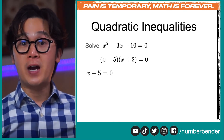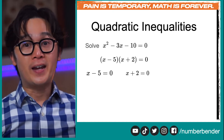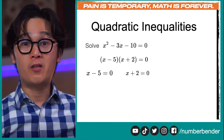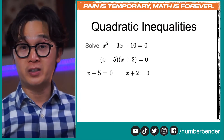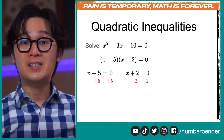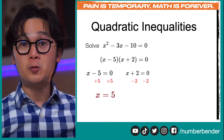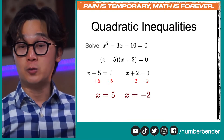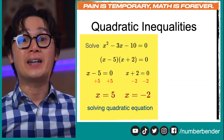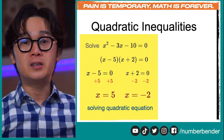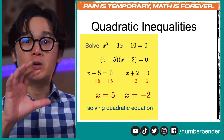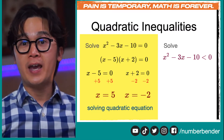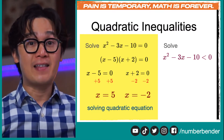For x minus 5 equals 0, adding 5 to both sides gives x equals 5. For x plus 2 equals 0, subtracting 2 from both sides gives x equals negative 2. This is how we solve a quadratic equation, and this factoring approach is how we'll begin solving x squared minus 3x minus 10 less than 0.